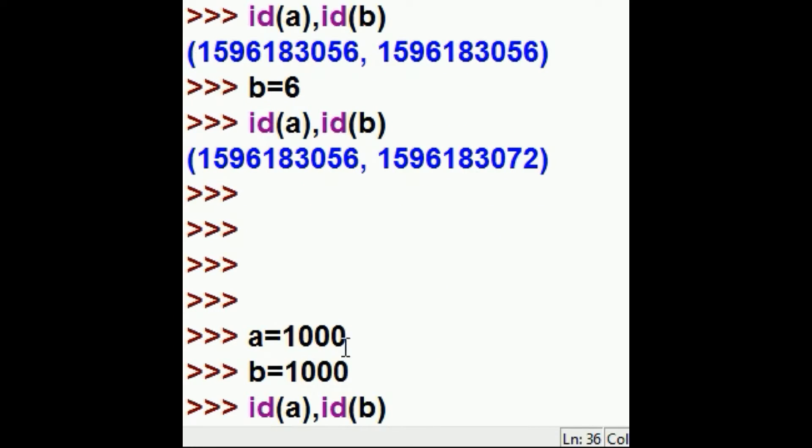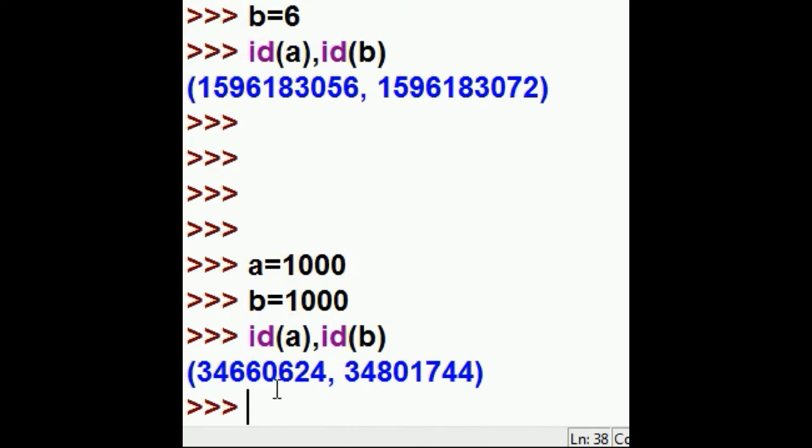So, A equals 1000, B equals 1000. ID of A, ID of B. They're going to be different. Why? Because they are post 256. They're greater than 256. And there we go.